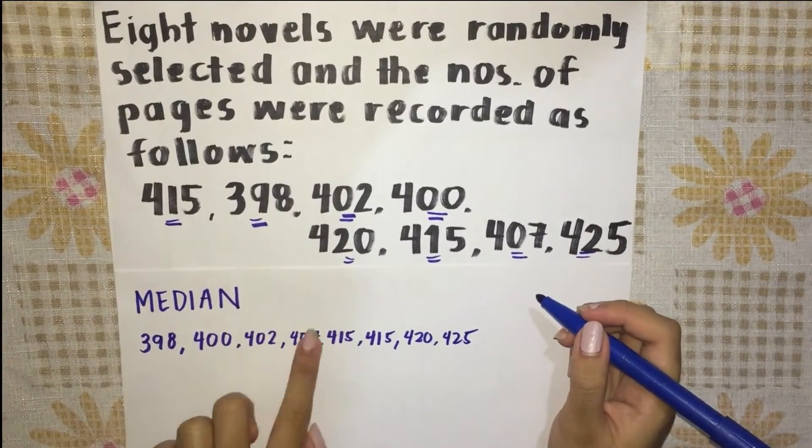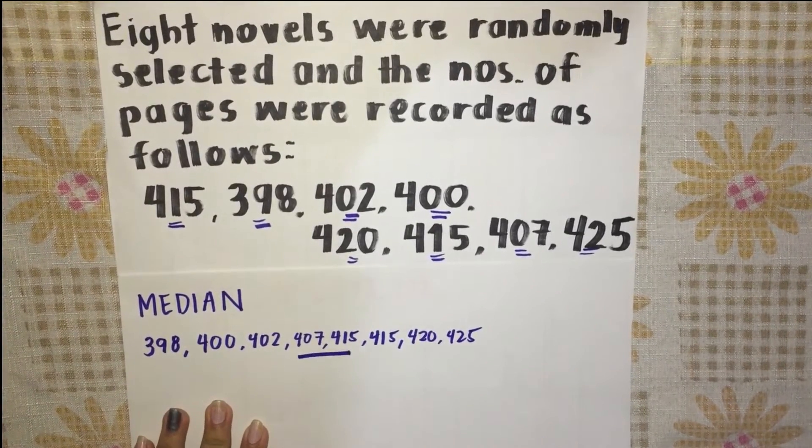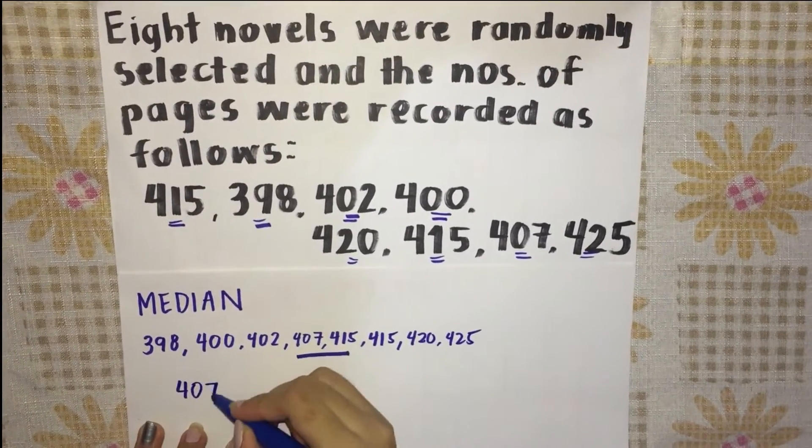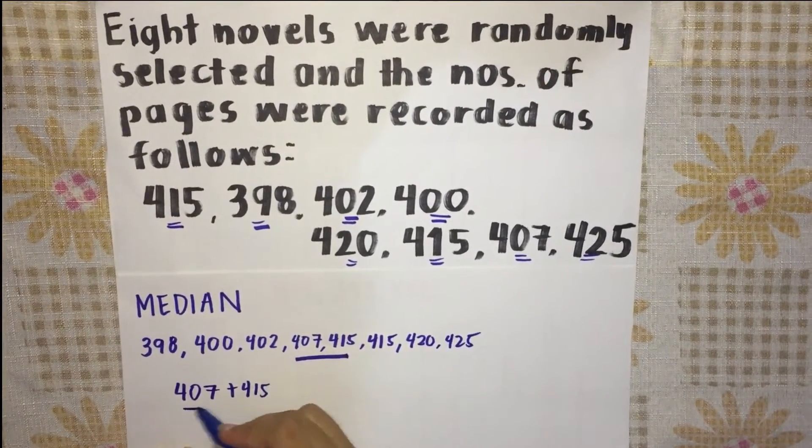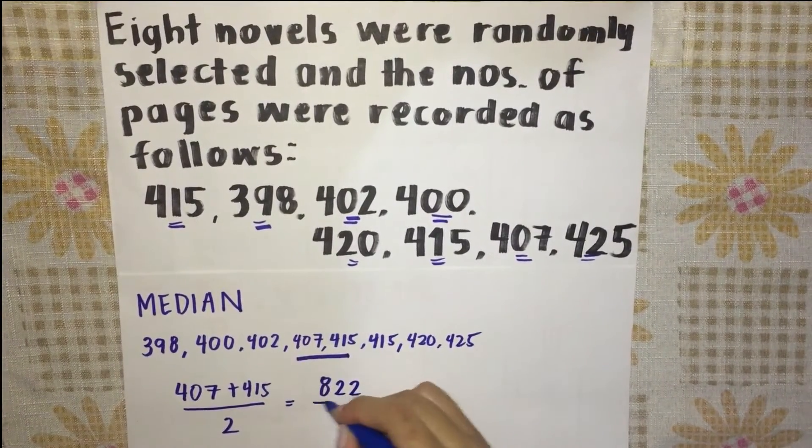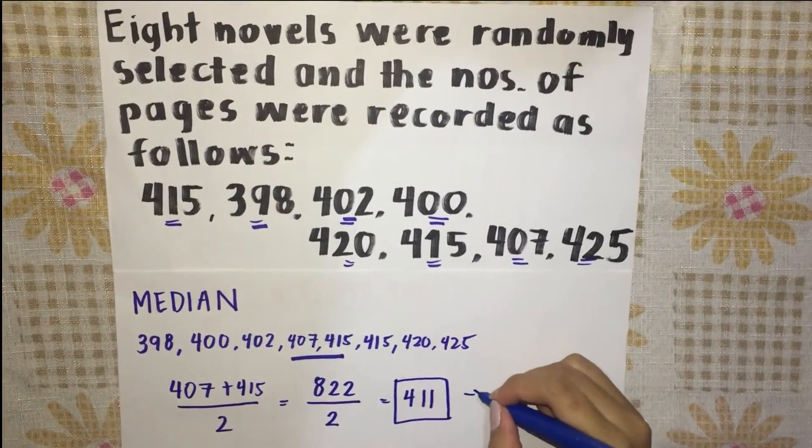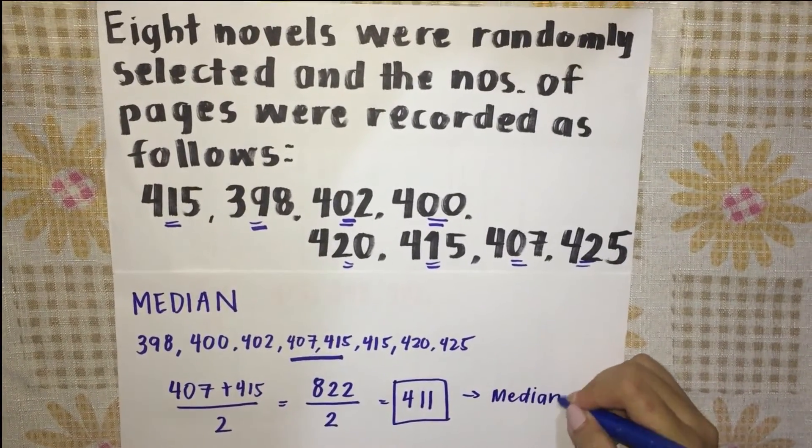Since the total number of the given data is even, we would get the 2 middle terms and divide by 2. Add the 2 middle terms, 407 and 415. The sum is 822. 822 divided by 2 is 411. The median is 411.